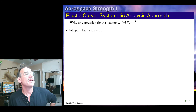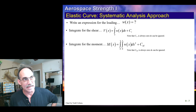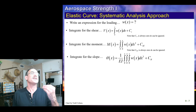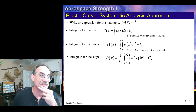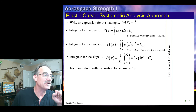Then we integrate to get the shear — the constant of integration is zero, so we can ignore that. We integrate again and that gives us the moment. I like to call these constants C-sub-V and C-sub-M — I find it easier than C1, C2, to show that C-sub-V came into play when we integrated for shear, C-sub-M when we integrated for moment, C-theta when we integrated for slope, and C-sub-y when we integrate for deflection. So we integrate the moment for the slope, and then integrate one more time to get the deflection.